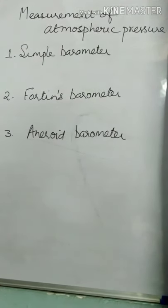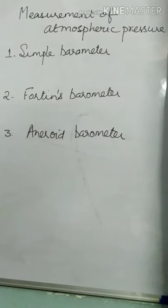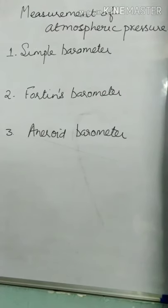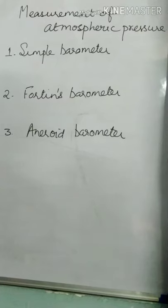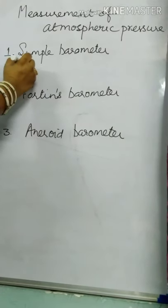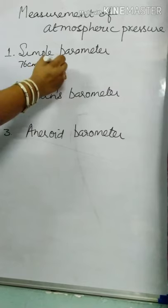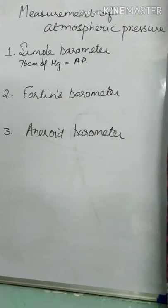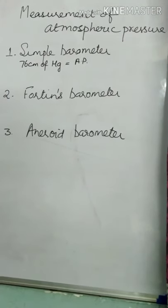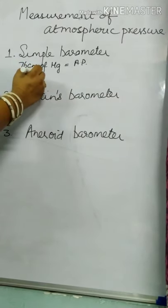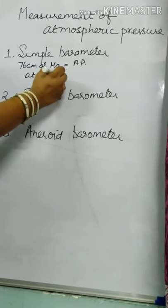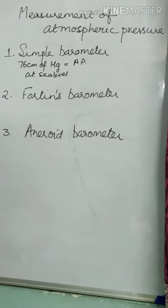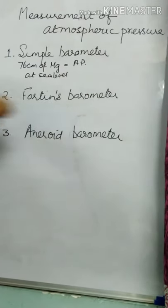The simple barometer is the first attempt to measure atmospheric pressure. The liquid used in it is mercury, and you must recall that 76 centimeters of mercury column balances the atmospheric pressure. So we say atmospheric pressure is equivalent to 76 centimeters of mercury column, and this is measured at sea level. Since there are certain drawbacks in the simple barometer, it was modified into the Fortin's barometer.